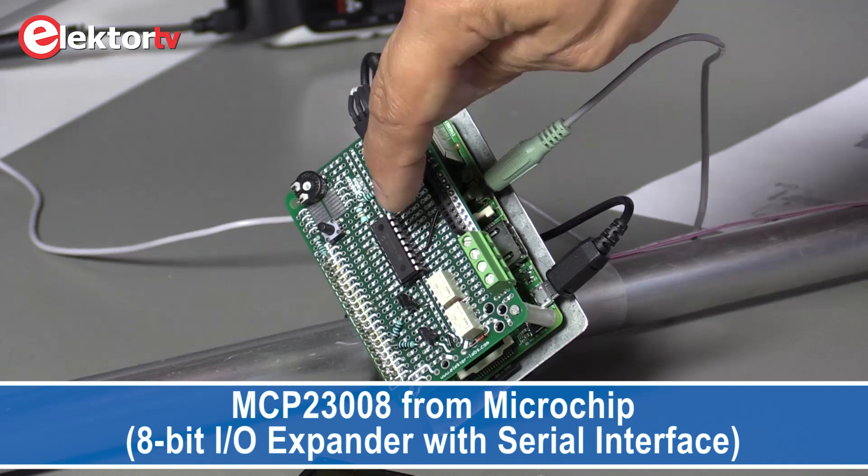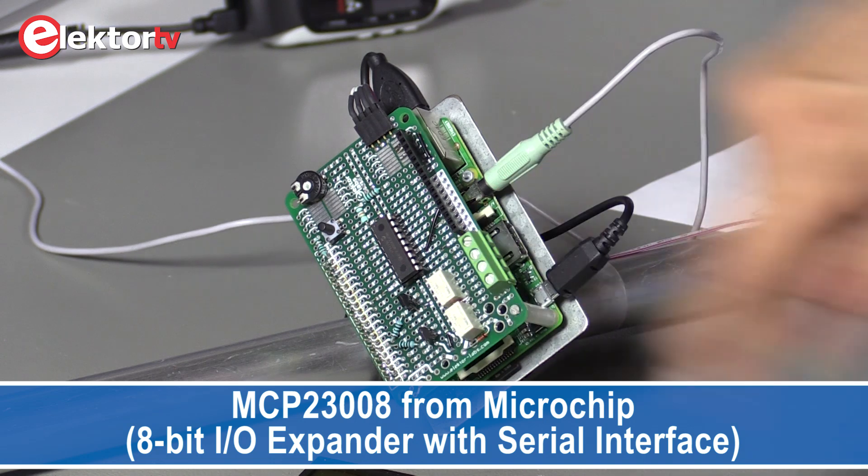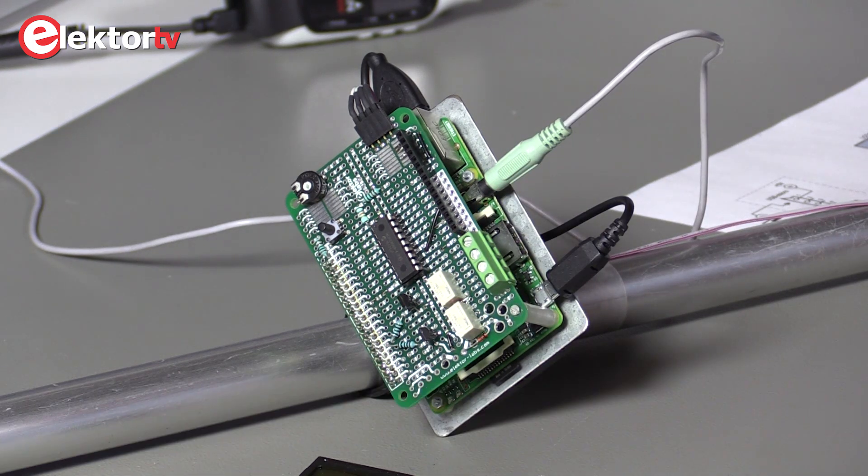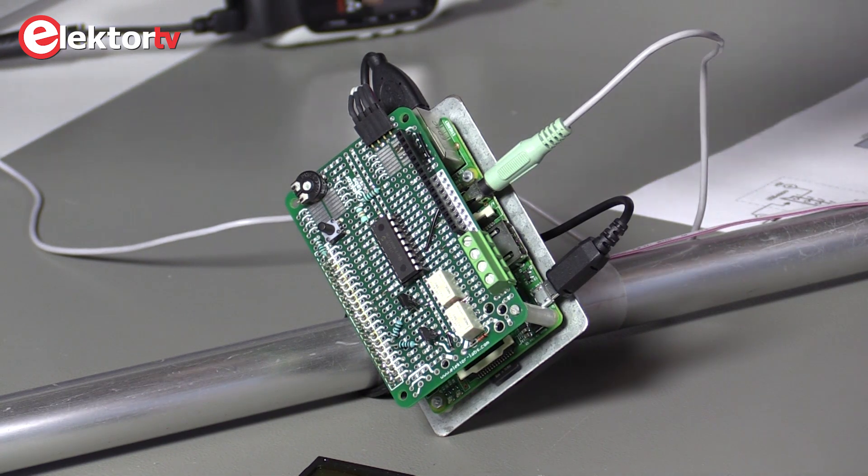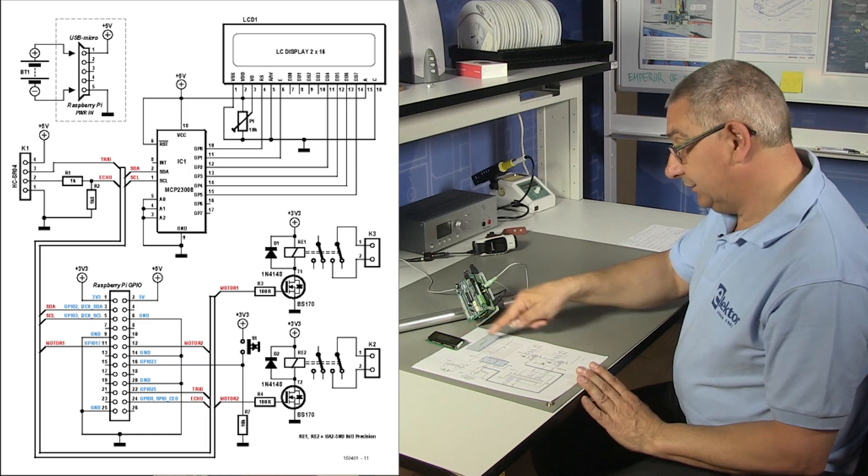As you can hear there's an MCP processor, and there's two relays here steered by some transistors. And you can adjust some things. And here's the on-off button. And we have here the schematics. You can see here the display.